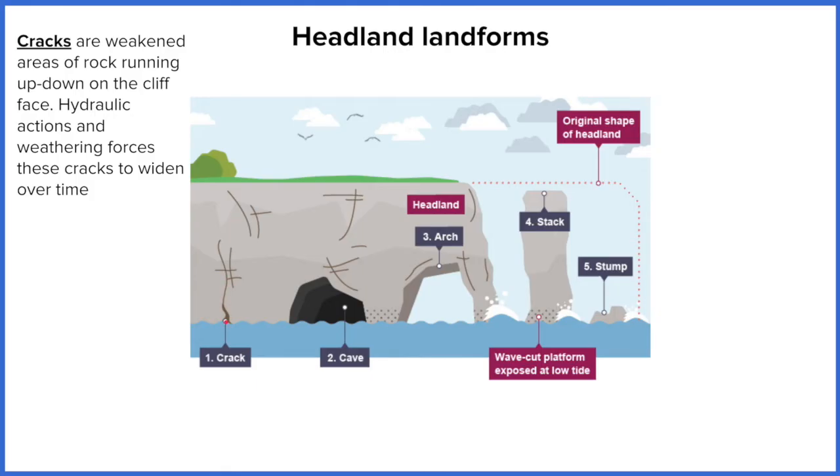So it's at cracks where we start to see a weakness occurring in the headland. Hydraulic action will force air in and compress it, and that compressed air will force the cracks and joints to become bigger and create larger cracks. As the cracks get bigger, they can fit sand and silt in, and so abrasion will start to wear away on the inside of the crack as well, forcing it out to be wider. And the process of hydraulic action and abrasion will eventually start to take chunks of rock away from the crack and widening the entrance.